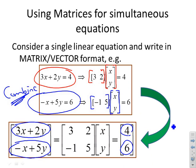I've represented 3x plus 2y and minus x plus 5y with this matrix 3, 2, minus 1, 5, times this vector xy. The 3, 2 has come from the top equation and the minus 1, 5 from the bottom equation.